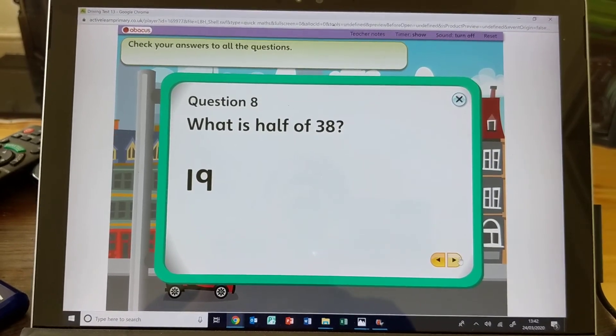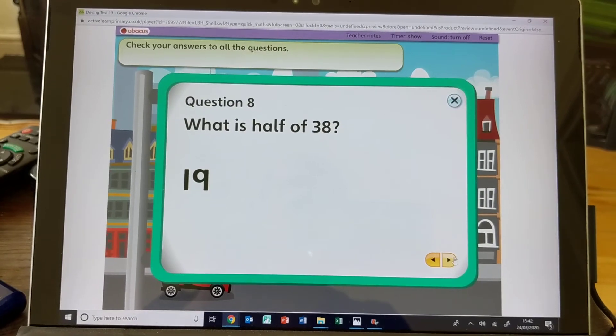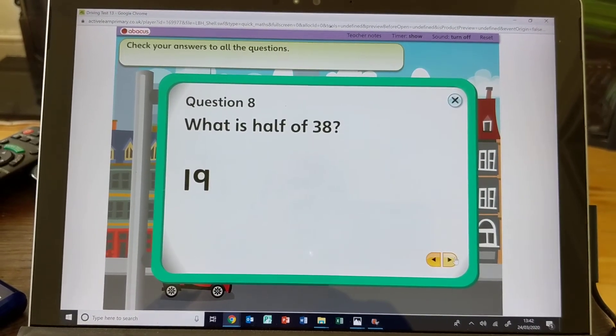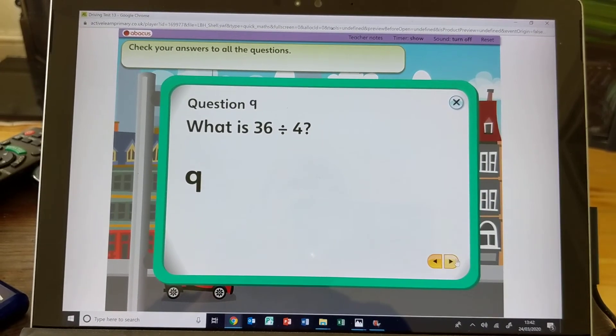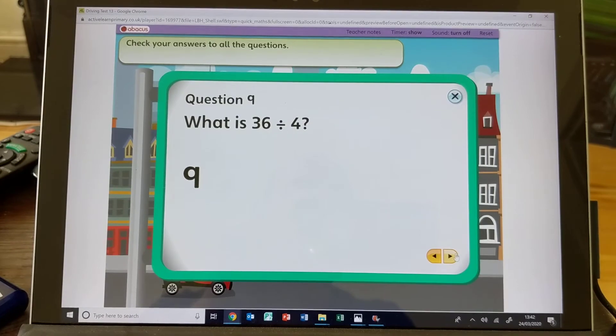Half of 38 is 19. Half of 30 is 15, half of 8 is 4, add those two together and you get 19. Question 9: What is 36 divided by 4? 9. So 9 times 4 is 36.